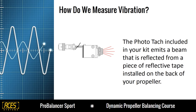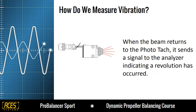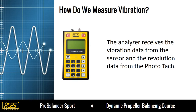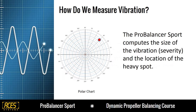We also need to measure the rotation of your propeller using the photo-tac included in your kit to emit a beam that is reflected from a piece of reflective tape installed on the back of your propeller. When the beam returns to the photo-tac, it sends a signal to the analyzer indicating that a revolution has occurred. When the analyzer receives the vibration data from the sensor and the revolution data from the photo-tac, it computes the size and severity of the vibration, and the location of the heavy spot. It uses all of this information to generate a suggested solution to install on your propeller assembly to balance your propeller.